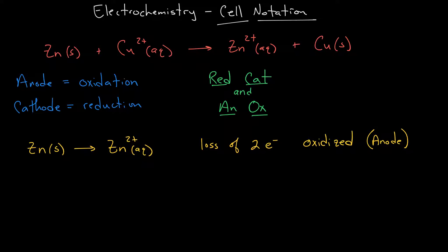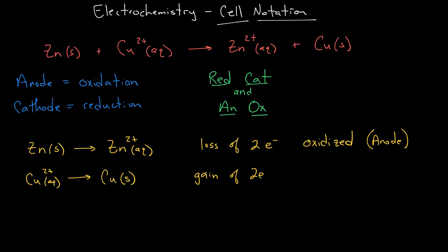Since zinc is the anode, that means copper is going to go from copper two-plus to copper solid. That is a gain of two electrons, which indicates that copper is reduced — and reduced means it's at the cathode.